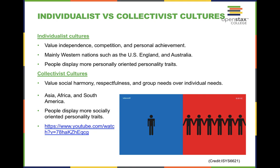When it comes to individualist cultures, here in the United States we are very much a me culture — we value independence, competition, and personal achievement, and people display more personally oriented personality traits. In collectivist cultures, more so in Asia, Africa, and South America, they value social harmony, respectfulness, and the group's needs over the individual's needs. Here in the United States, England, and Australia, it's more about taking care of yourself first and then potentially helping others, valuing individual competition rather than the success of a group.